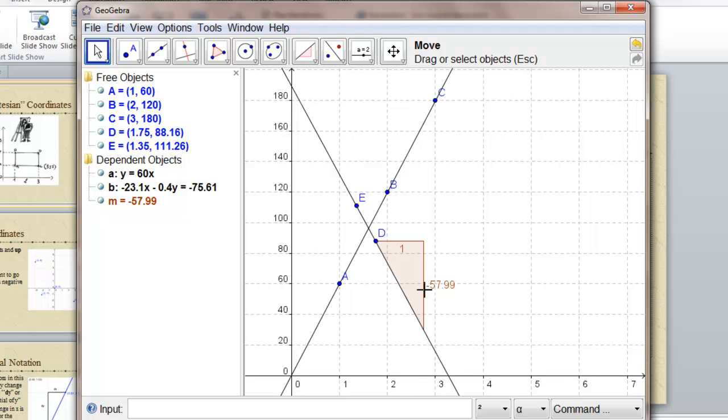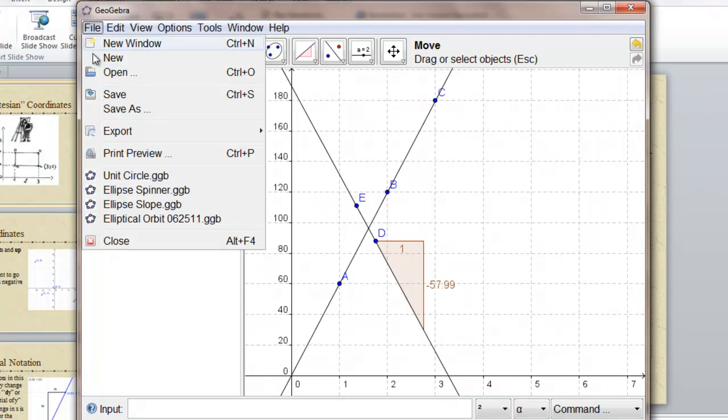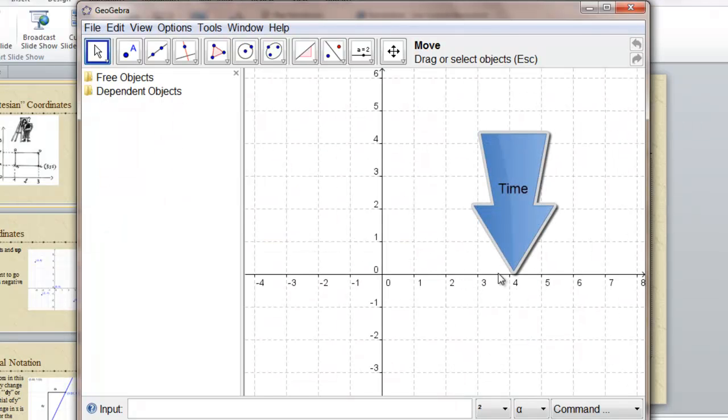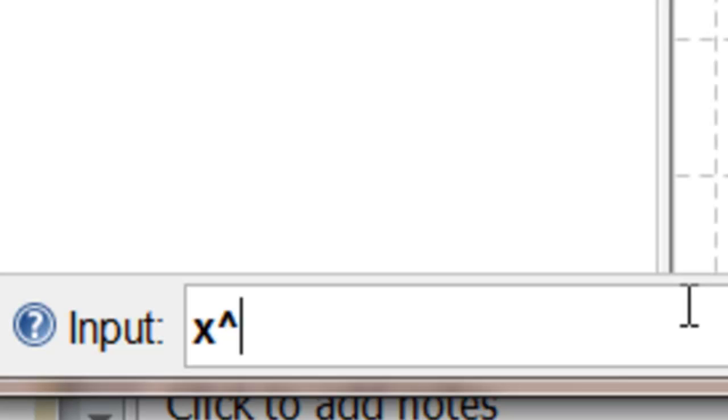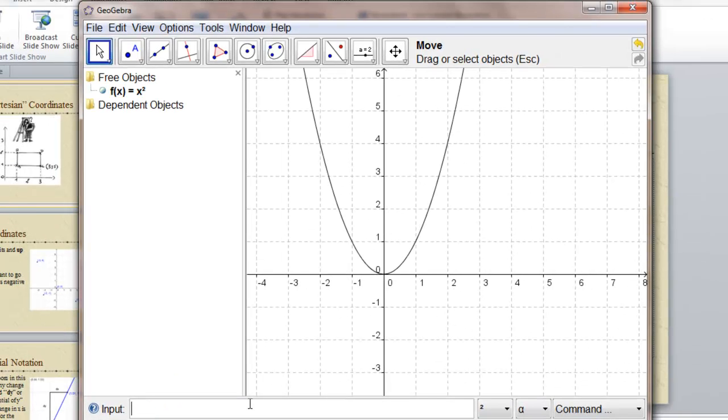But if we graph Galileo's problem, we don't get a straight line. Remember, the distance was equal to the square of the time it rolled. We'll use x for the time and y for the distance. Actually, we won't put y equals. We'll just put x squared and let GeoGebra assign the function a name because that will be easier for things we want to do in the future. Trust me. y equals x squared is not a straight line. It's called a parabola.